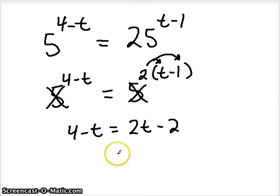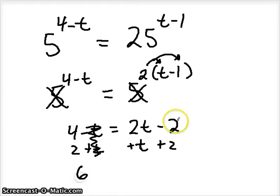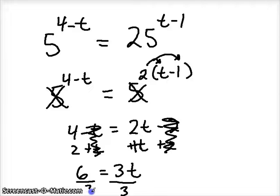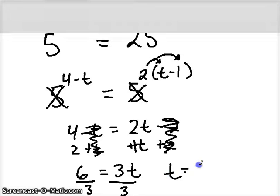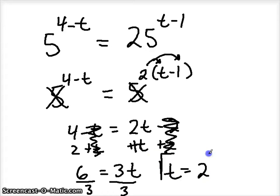Keep solving for t. I would prefer to add t to both sides, and we could even add 2 to both sides as well. So this goes away and we're left with 6. This goes away over here and we're left with an invisible one there, 3t. Divide by 3 to get t by itself, and t ends up being 2.